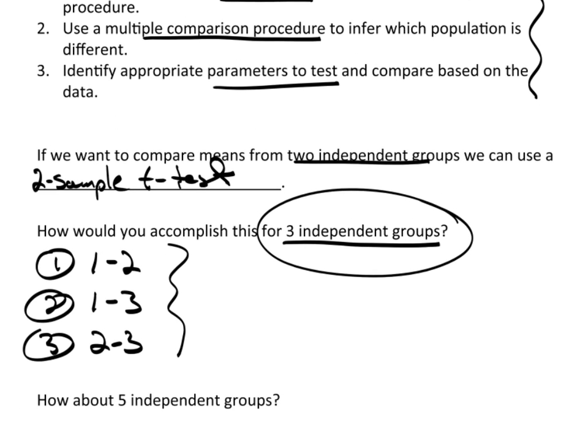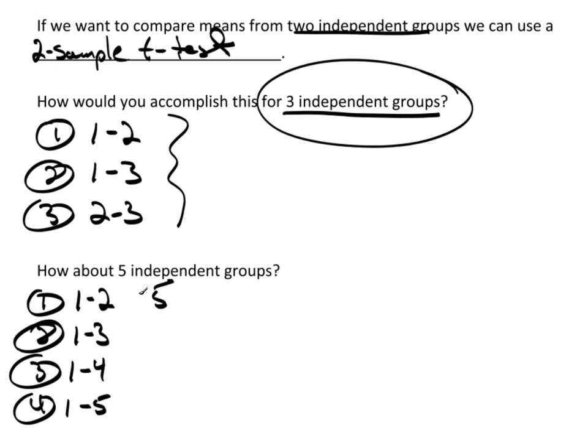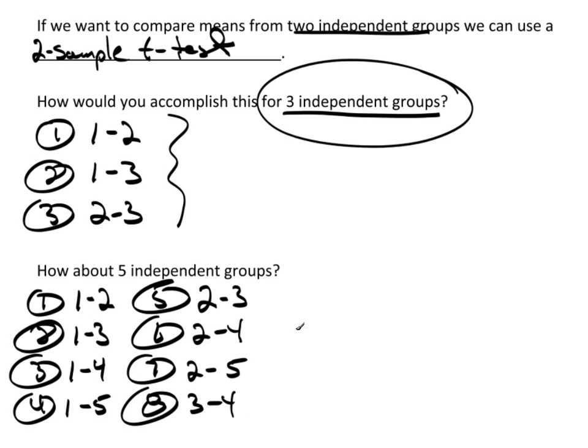That doesn't sound too bad. But what if I have five independent groups? I could take group 1 versus group 2, then group 1 versus group 3, group 1 versus group 4, group 1 versus group 5. Then group 2 versus group 3, 2 and 4, 2 and 5. Then 3 and 4, 3 and 5, and finally 4 and 5. These are all pairings, two at a time, from five groups. So I end up with 10 different two-sample t-tests.